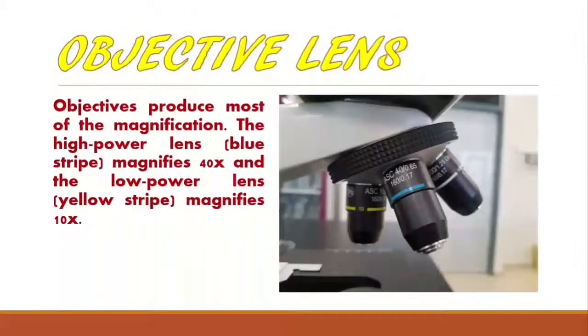Objective lens. Objective lenses offer magnification. The high power lens has a blue strip and magnifies 40 times, and the low power lens has a yellow strip and magnifies 10 times.